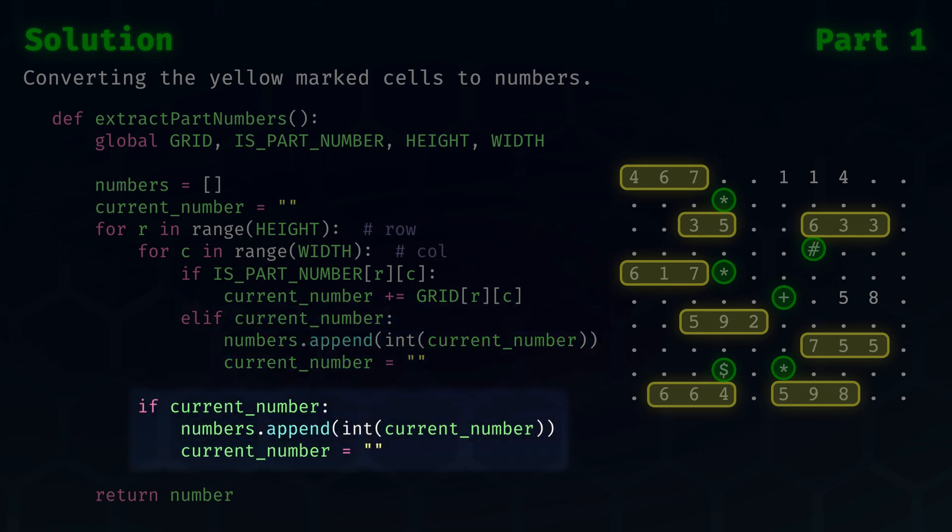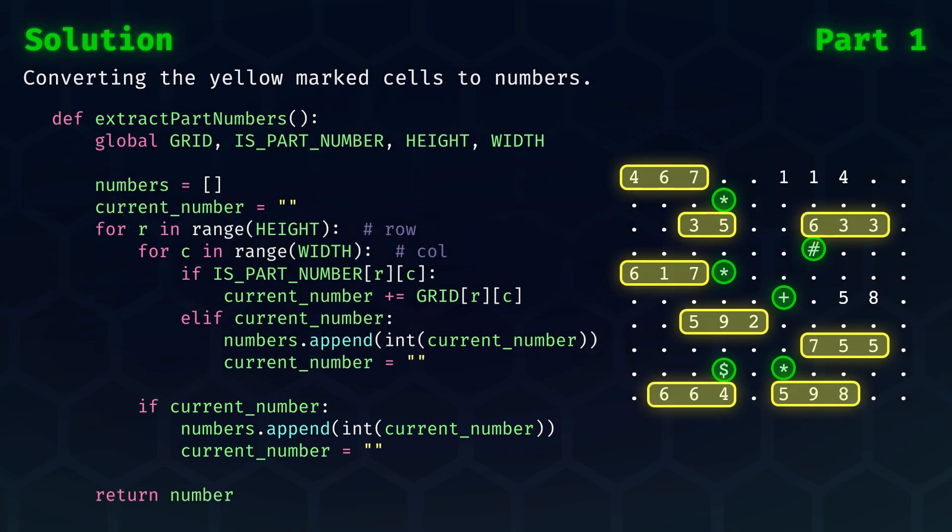It is possible that a number ends at the edge of the grid, so after processing a row, we need to check if we do not still have a number which we did not yet append to the list. And that's it, you now have all the tools needed for solving part one.